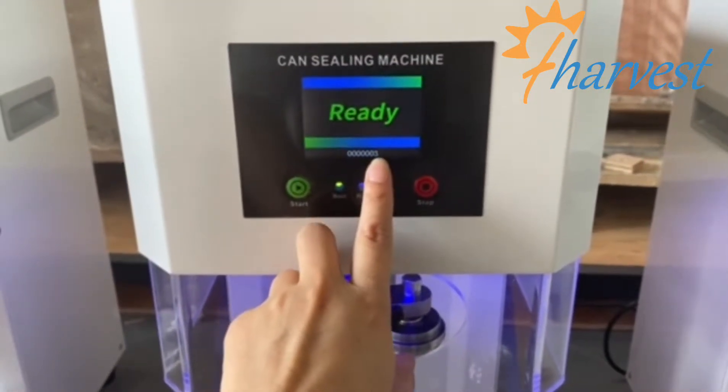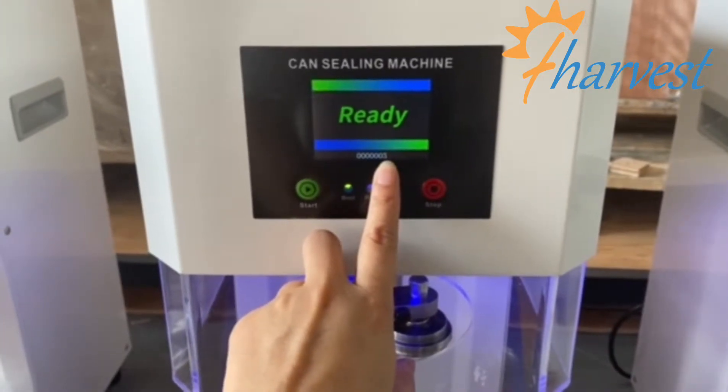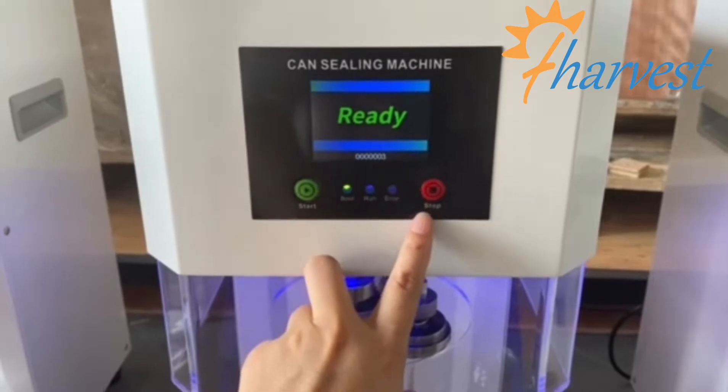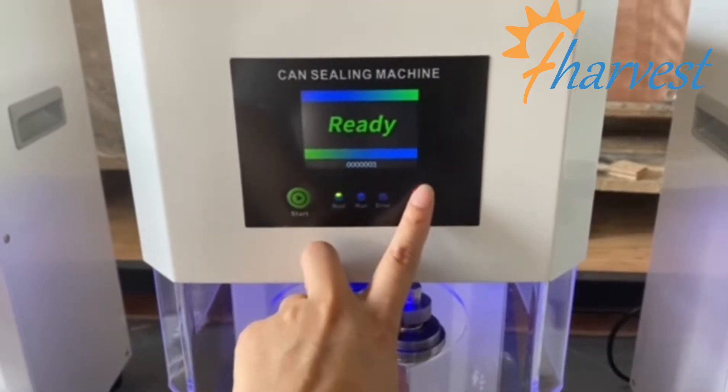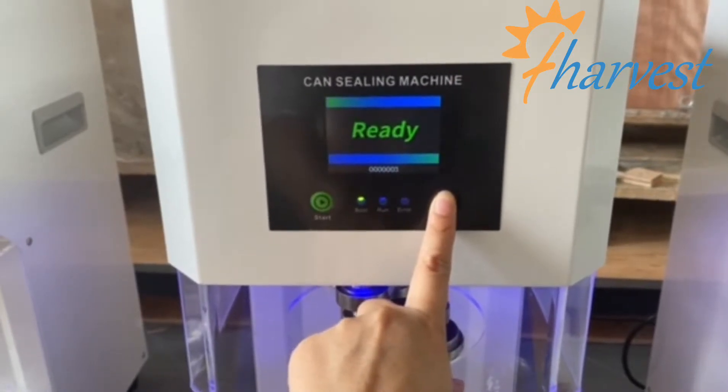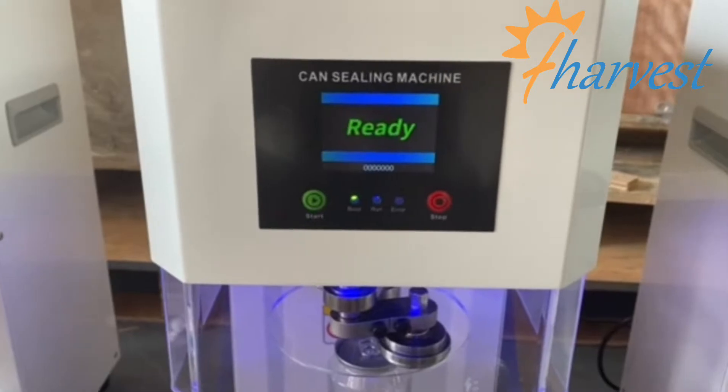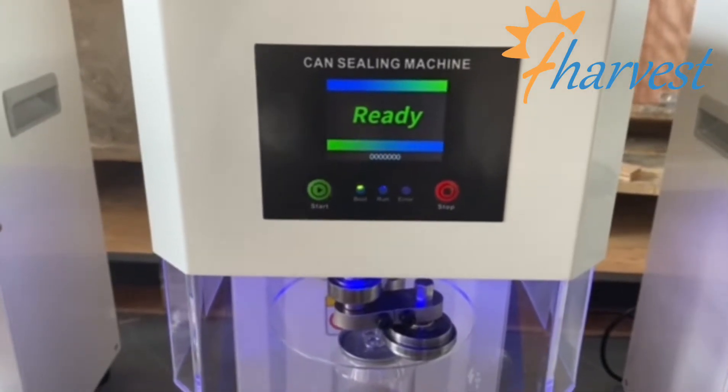You see, now this is steaming three cans. You want to clear this one to zero. You can press the stop button for five seconds. Now it has cleared to zero.